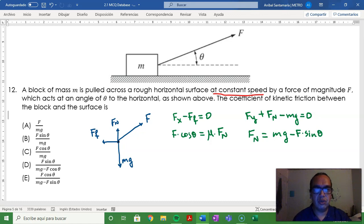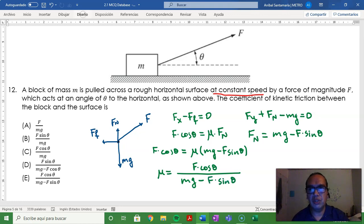If you make a substitution there, you have that F cosine of the angle is equal to mu times mg minus F sine of the angle, and so mu is equal to the quotient F cosine of the angle over mg minus F sine of the angle, and that is option E.